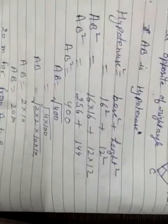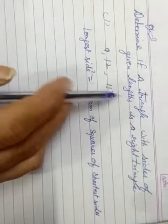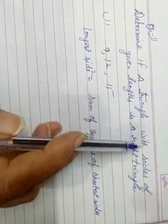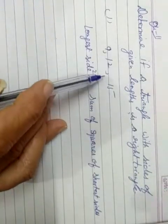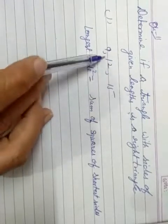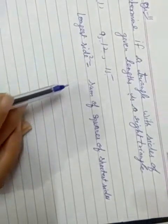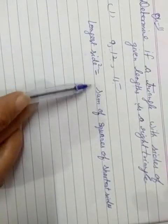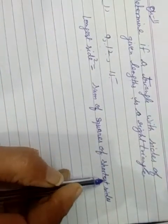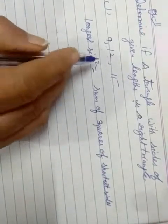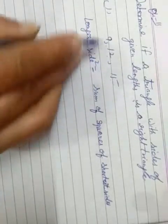Now next question number 11: if a triangle with sides of given length is a right triangle. You have to tell if these three sides are the sides of a right triangle, yes or no. To find this out, first we write: longest side square is equal to sum of square of shortest sides. 15 is the longest side.